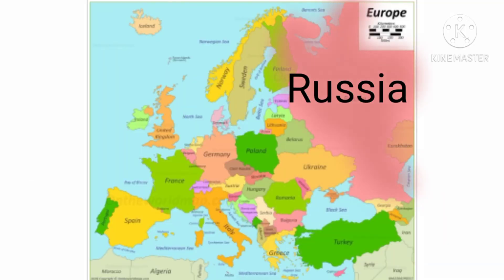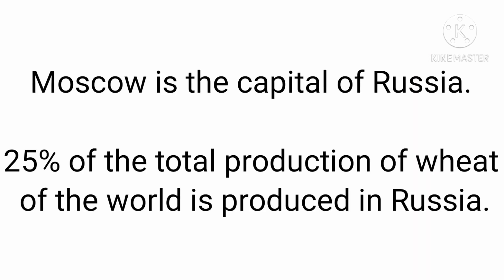Russia: Moscow is the capital of Russia. Russia produces 25% of the total world production of wheat.